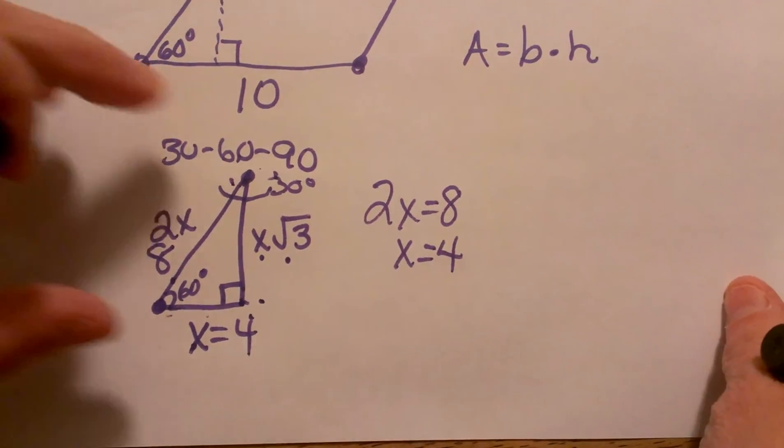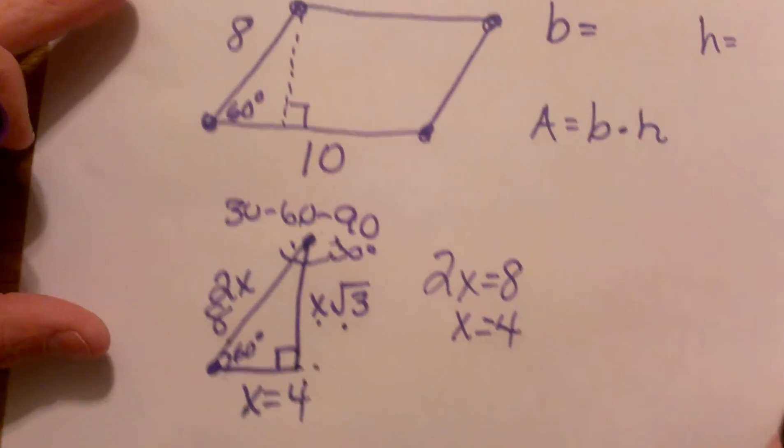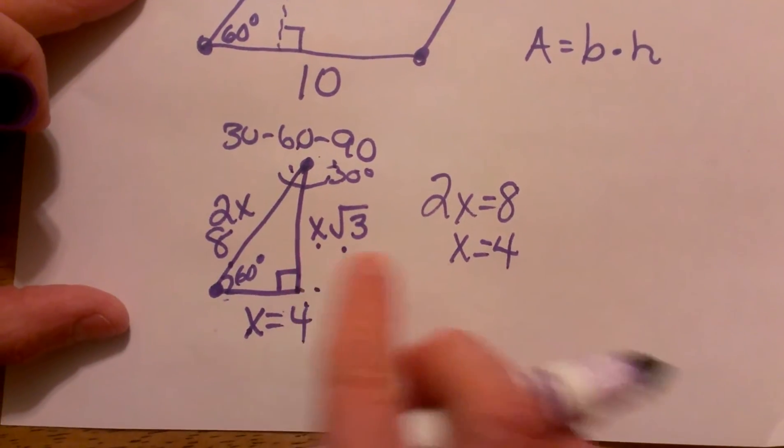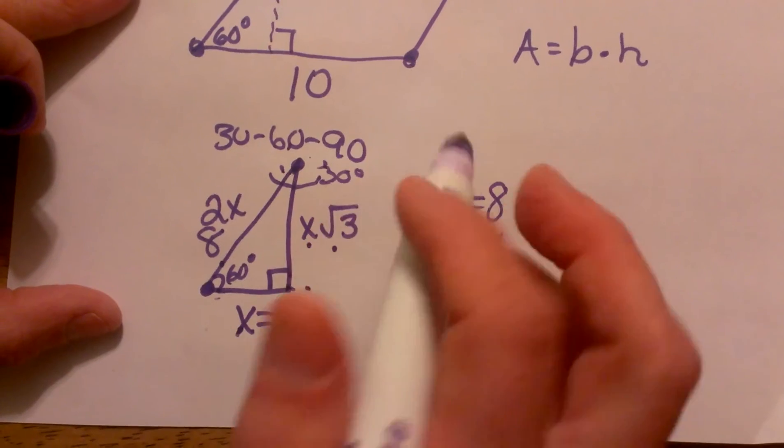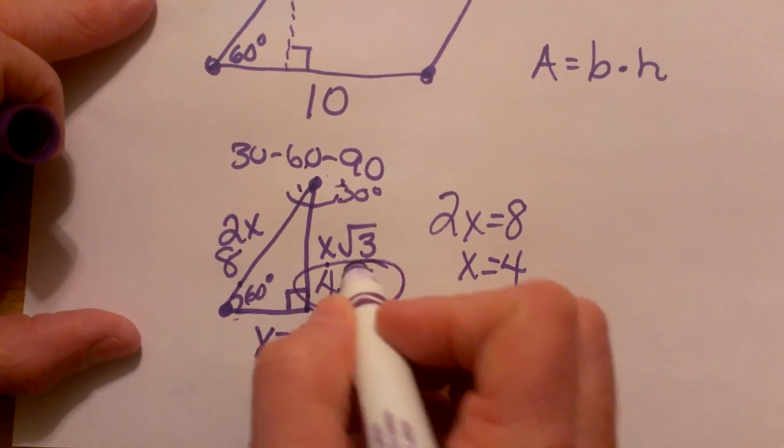I need my long leg because that's the height. All I have to do is use my formula. Since I know that x is 4, then it's 4 square root of 3, and that's my height.